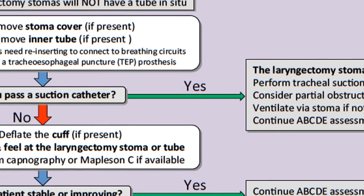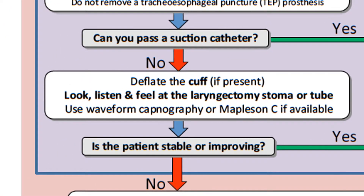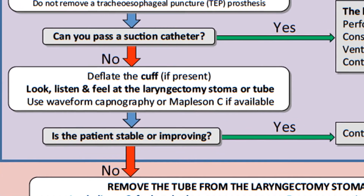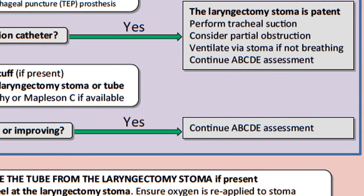If the suction catheter doesn't pass, move on to the second step in your assessment of patency. To do this, you will first have to deflate the cuff of the tracheostomy tube, if present, and look, listen and feel again at the laryngectomy stoma. You should feel air flowing from the laryngectomy site at the front of the neck. You can use the Mapleson C circuit or waveform capnography to assess for signs of breathing. If this improves the patient's clinical condition, continue with your ABC assessment.